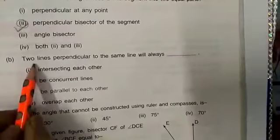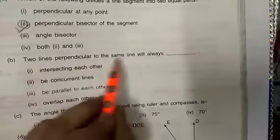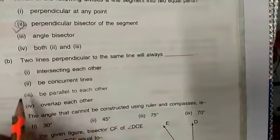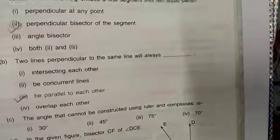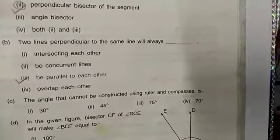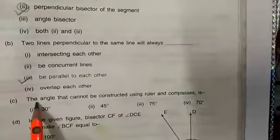Two lines perpendicular to the same line will always be parallel to each other. We have discussed in our previous e-lecture. Next question.